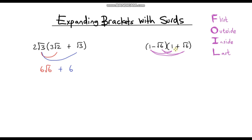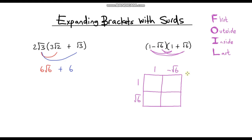The method I prefer is the grid method, where we do the same thing but set it out in a grid. So: 1 times 1 is 1. Then 1 times negative √6 is negative √6. Then 1 times √6 is √6. And finally √6 times negative √6 — that's going to be negative, and √6 times √6 is 6, so that's negative 6.